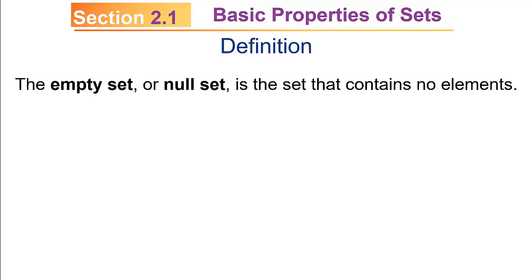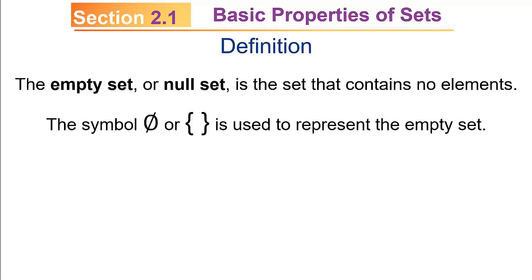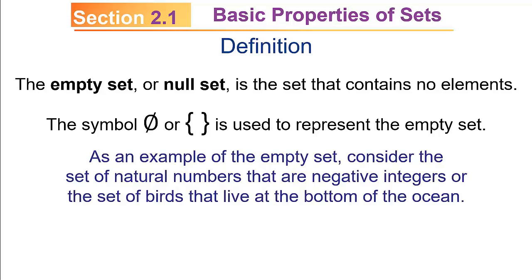We also talk about the empty set, or sometimes the null set — it's the set that contains no elements. We use two different symbols: a circle with a slash through it, or a pair of braces with nothing inside. For example, the set of natural numbers that are negative integers is an empty set, as is the set of birds that live at the bottom of the ocean — there simply aren't any such elements in either case.